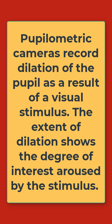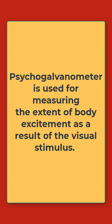Pupillometric cameras record the dilation of the pupil as a result of a visual stimulus. The extent of dilation shows the degree of interest aroused by the stimulus. The third device, the psychogalvanometer, is used for measuring the extent of body excitement as a result of a visual stimulus.